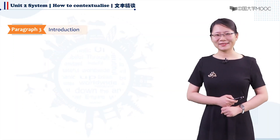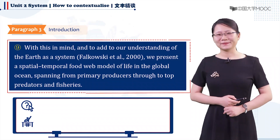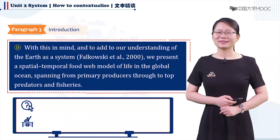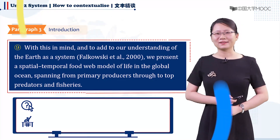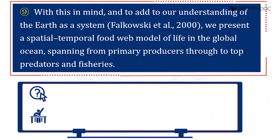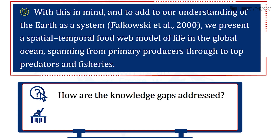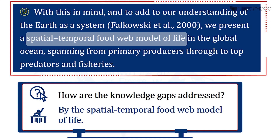Having identified the knowledge gaps, the next step is to address them. In sentence nine, the authors wrote: 'With this in mind, and to add to our understanding of the earth as a system, we present a spatial temporal food web model of life in the global ocean, spanning from primary producers through to top predators and fisheries.' The knowledge gaps are addressed through a spatial temporal food web model of life. This model is an improvement of the food web model previously mentioned.